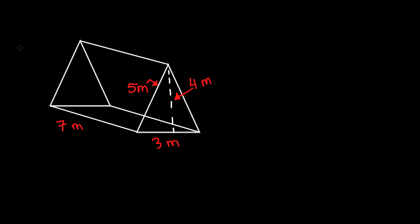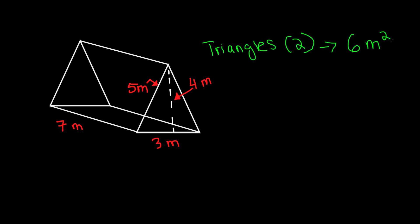So first let's find the area of the triangles. There are two triangles — one over here and one in the back. The height here is given as 4 meters and the base is 3 meters. Remember, in order to find the area of a triangle, it's going to be half times base times height. So 3 times 4 is 12, and we have to multiply that by one half, which gives us 6. So it will be 6 meters squared.